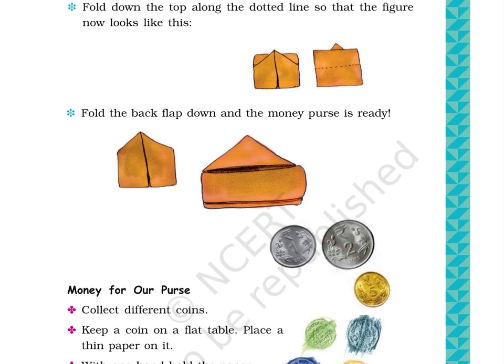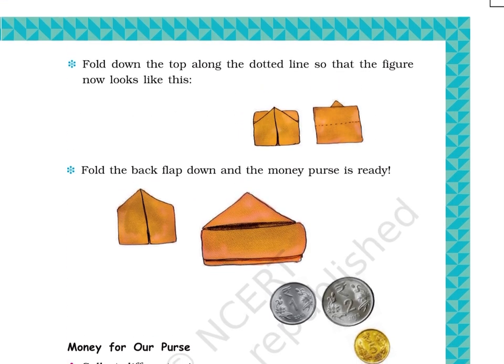Two pictures below the text show the front and back side of the paper. The front side looks like a square shape with a vertical line at the center and two triangles at the top left and right corners; from the top of the vertical line, two slanting lines move downwards making a triangular flap. The back side looks like a square with a dotted horizontal line at the middle and a small triangle at the center of the top side. This triangle is the edge of the flap.